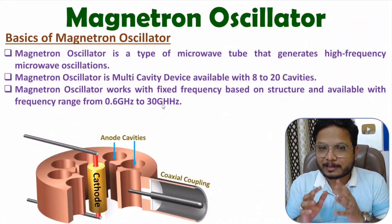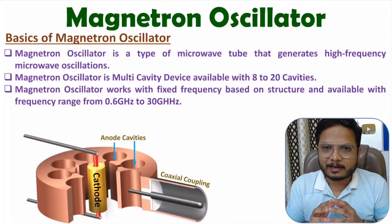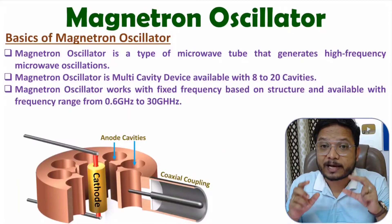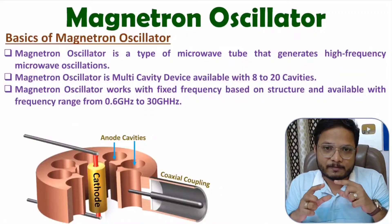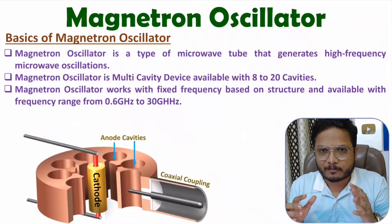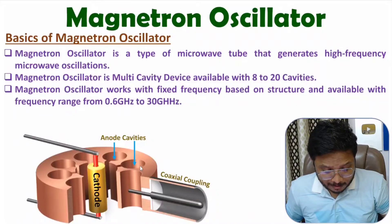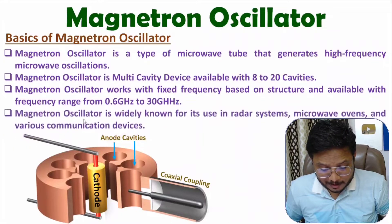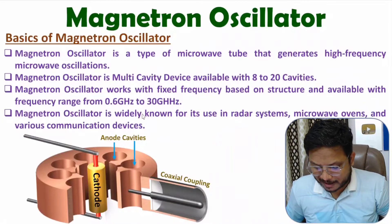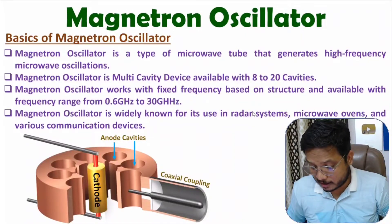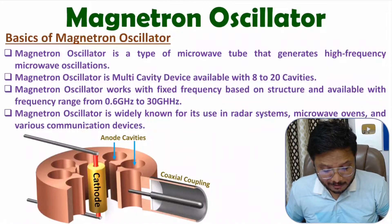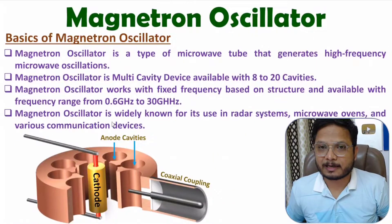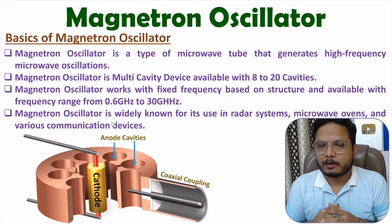The magnetron oscillator has a well-defined fixed frequency based on its structure. Its available frequency range is 0.6 GHz to 30 GHz. It is widely used in many applications such as radar systems, microwave ovens, and various communication devices as a microwave source.